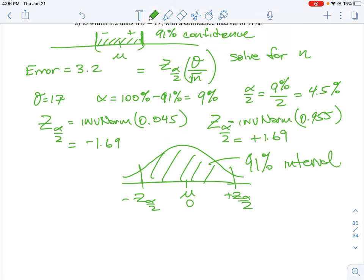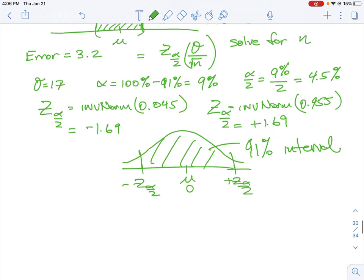In order to calculate the numbers with that degree of confidence, we're just looking to solve for n. We plug in our equation: 3.2 is our error, our z alpha divided by 2 is 1.69, our sigma is 17, and we divide that all by root n.